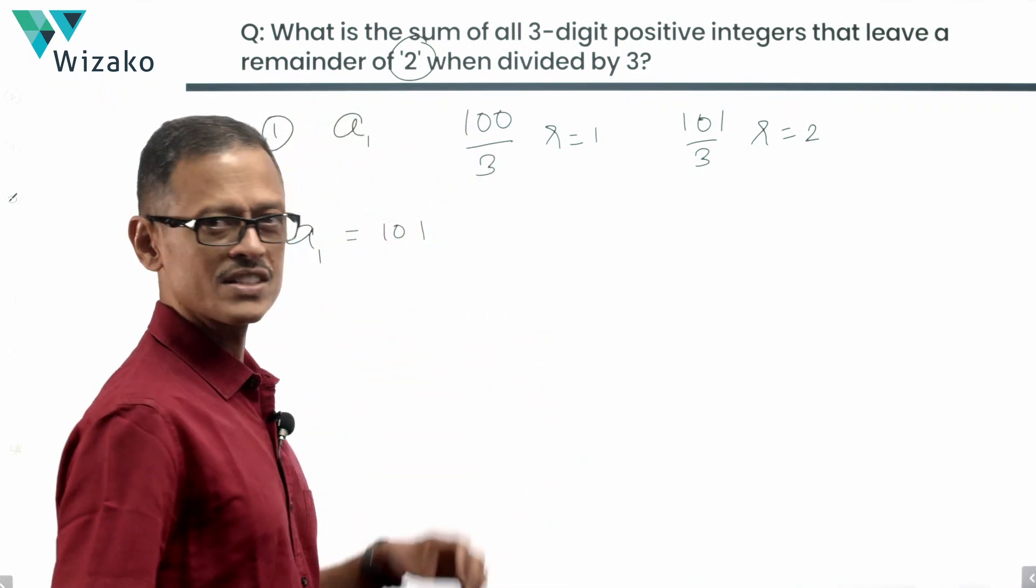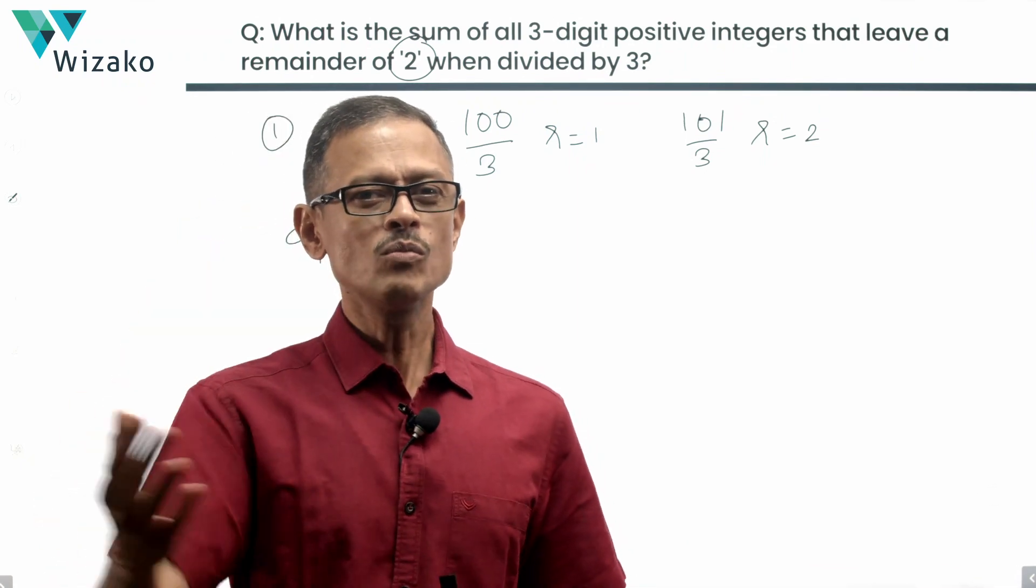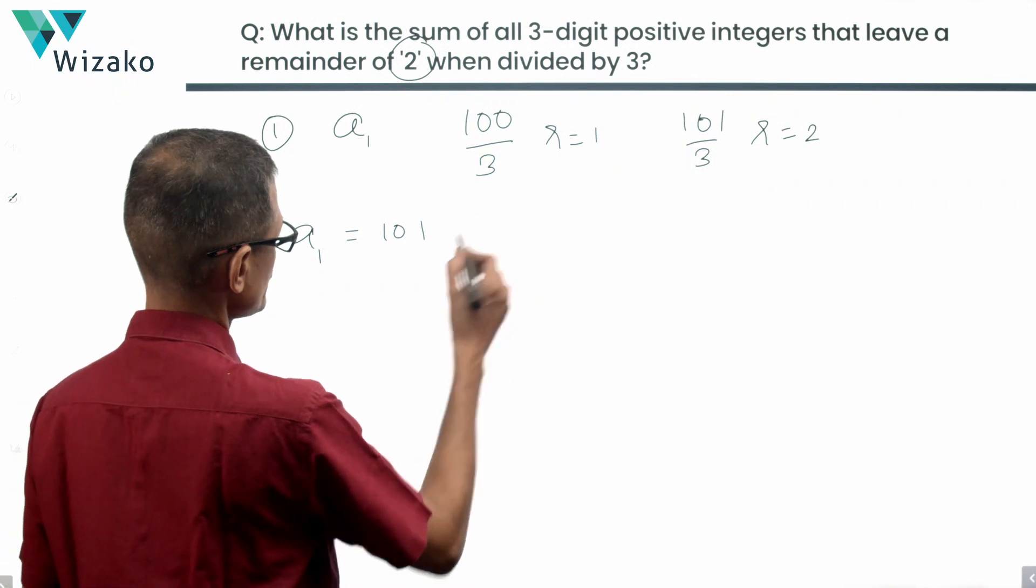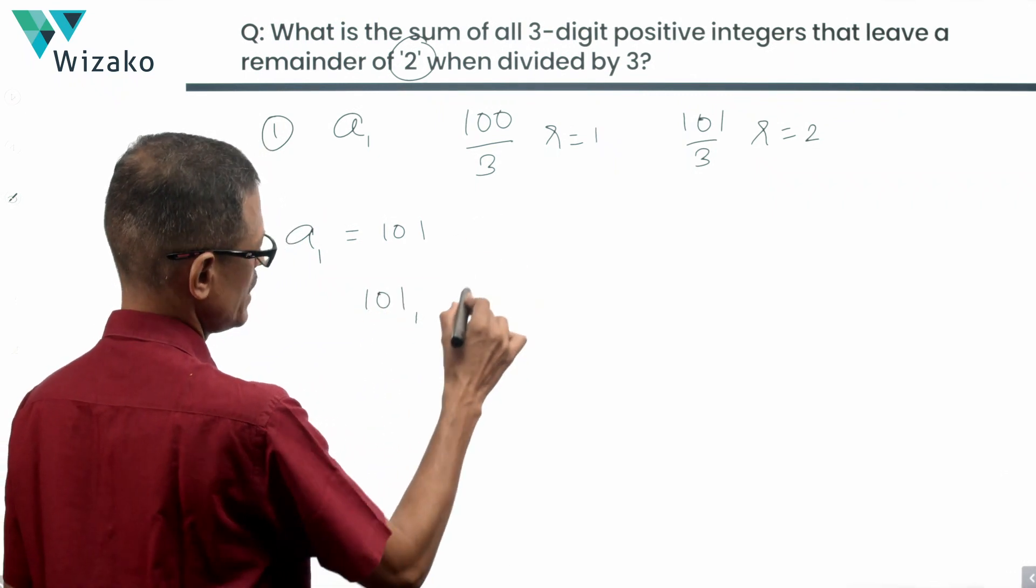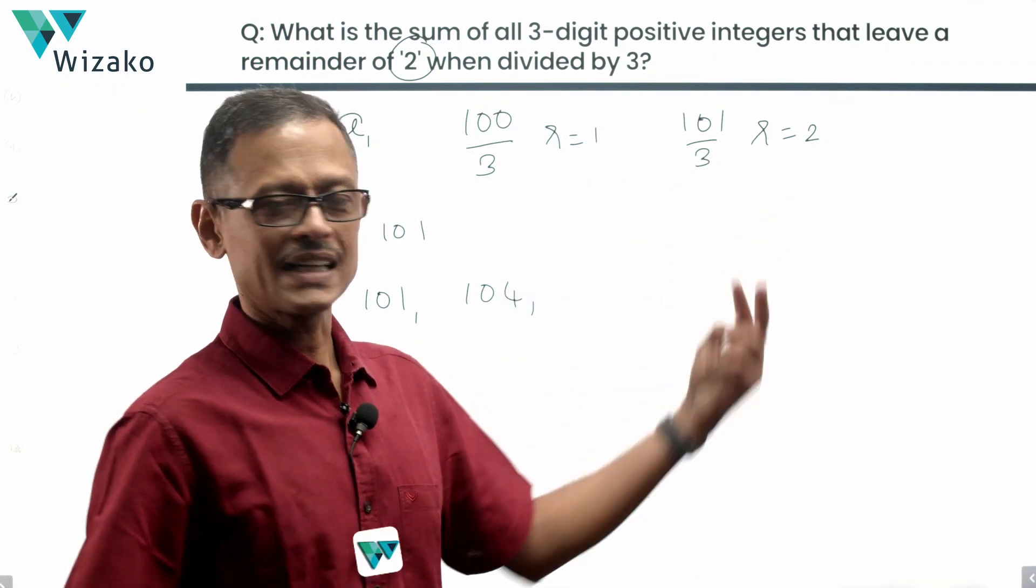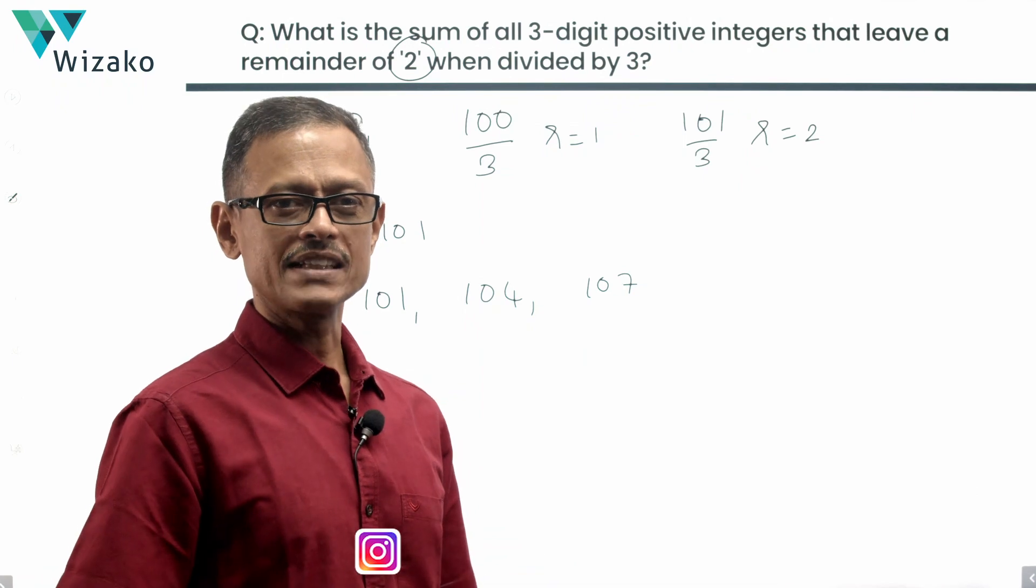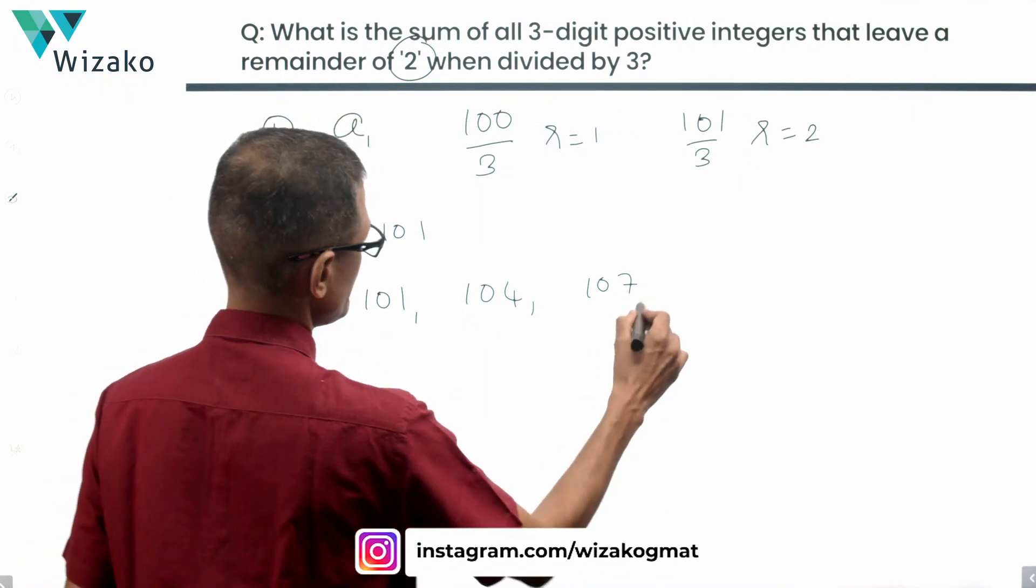What's the next term in the sequence? 101 leaves a remainder of 2. 102 will be divisible by 3, which means two more than that. 104 is the next term of the sequence. So 101 is the first term, 104 is the next term. 105 is divisible by 3, two more than that. 107 will be leaving a remainder of 2 when divided by 3. 108 is divisible by 3. 110 will leave a remainder of 2 when divided by 3.